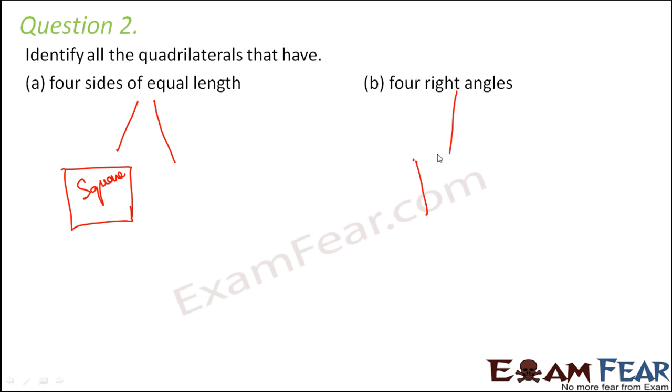Basically, square would come here also because in square you have all right angles, so square would fit into this criteria as well. Four sides equal, another example would be rhombus.